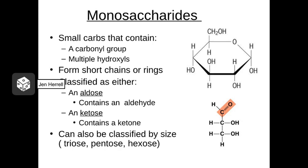The smallest carbohydrates, also known as the simple sugars, are called monosaccharides. Monosaccharides consist of between three and seven carbons in either a chain or a ring. Here we have a little chain that consists of three carbons, and up here we have a ring that consists of six carbons — so it's a monosaccharide as well.